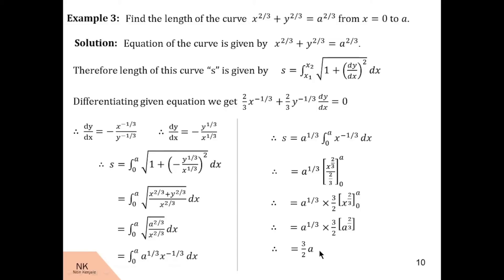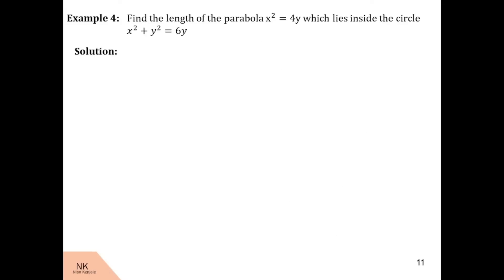I hope you understood this answer. Now let us proceed to our last example. Here we are asked to find the length of the parabola x² = 4y which lies inside the circle x² + y² = 6y. This is an interesting example because the coordinates of the endpoints of the curve are not mentioned. We have to find the length of the parabola that lies inside the circle, so let us first draw these curves and find the coordinates of the endpoints.